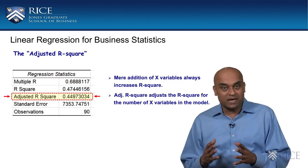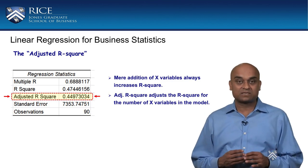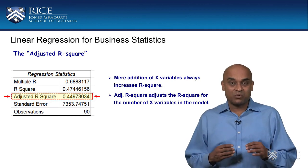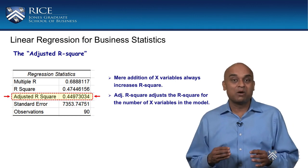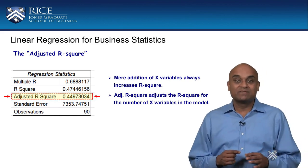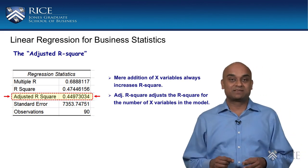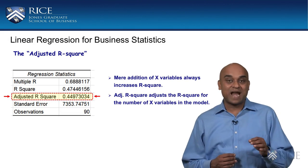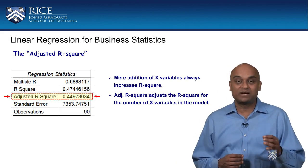To partially correct for this kind of phenomenon, the adjusted R square adjusts the R square for the number of X variables in the model. The adjusted R square increases only if the additional X variable improves the model more than would be expected by chance. It decreases when the additional X variable improves the model by less than expected by chance. In our regression output with the two additional random variables, note that the R square increased. However, the adjusted R square decreased.